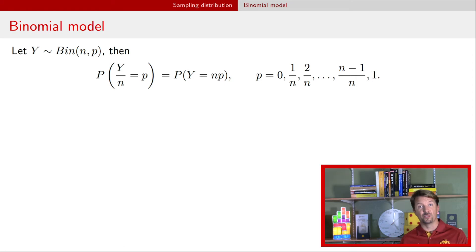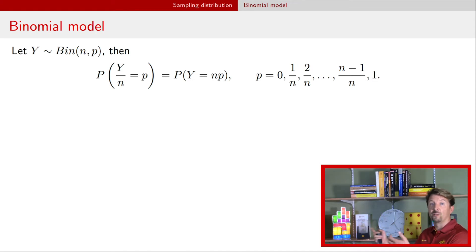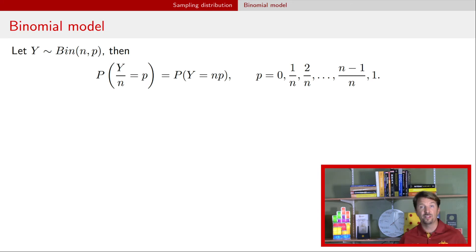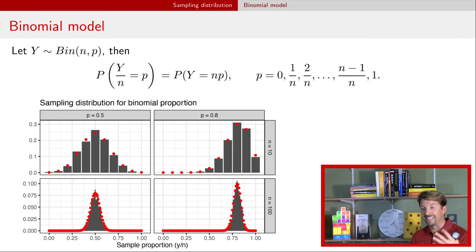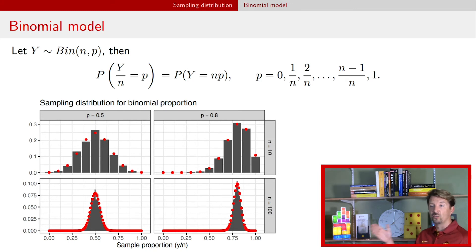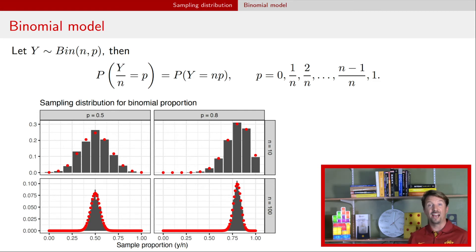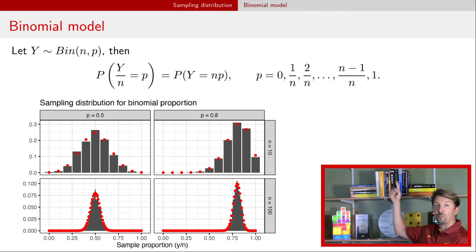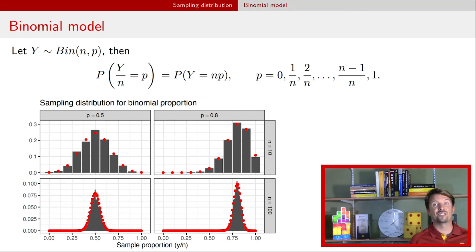We now have the sampling distribution of the sample proportion, which we can calculate by finding the associated binomial probability that y equals a particular value n times p — that is, 0, 1, 2 successes and so forth. We can randomly simulate binomials — again about 1000 — with the probability ranging from 0.5 to 0.8 on the two columns and sample size ranging from 10 to 100. Overlaid on the histograms is the PMF shifted to show the sample proportion on the interval [0,1], and we see a pretty good match.